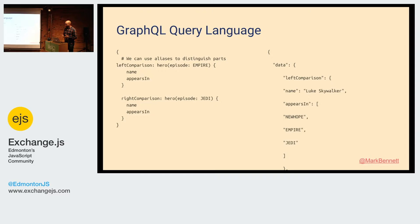A lot of times you might want to use the same field a couple of times in a query. They have a concept called aliases. You can have a left comparison and a right comparison — they hit the same query on your data source but come back with different names in the JSON. So you'd get left and right on the response side.